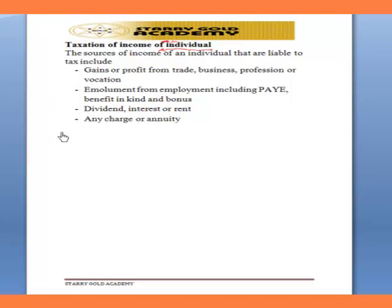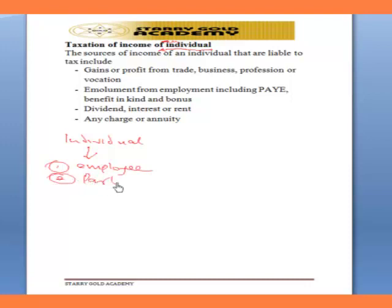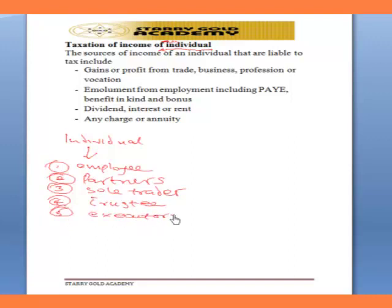An individual will include: one, an employee in employment; two, a partner in a partnership; three, a sole trader; four, a trustee — I mentioned a trustee and an executor in the last lecture; five, an executor; and then families. These are the persons that make up an individual.